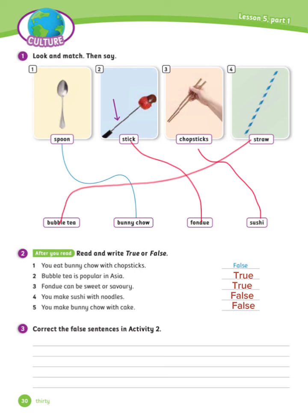Exercise number 3: Correct the false sentences in Activity 2. Let's see the answers. Number 1: You eat sushi with chopsticks. Number 2: You eat panichou with a spoon. Number 4: You make sushi with rice.